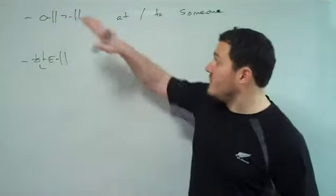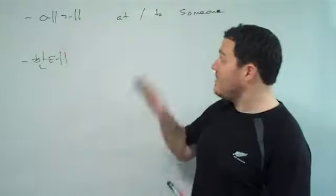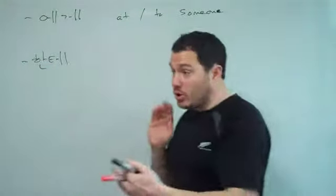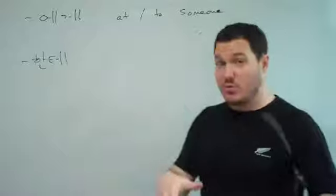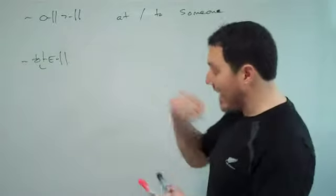Alright, in this video we are talking about 'a gay'. 'A gay' basically means 'at someone' or 'to someone'. A couple of examples - the one we're dealing with right now is 'laugh at me'.